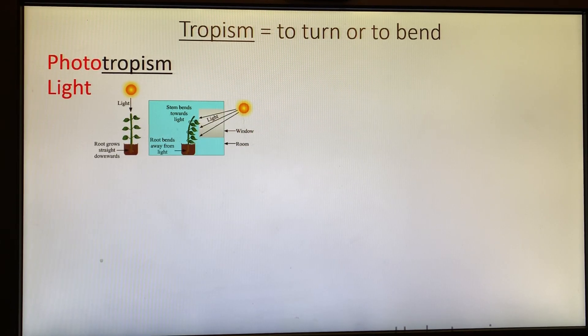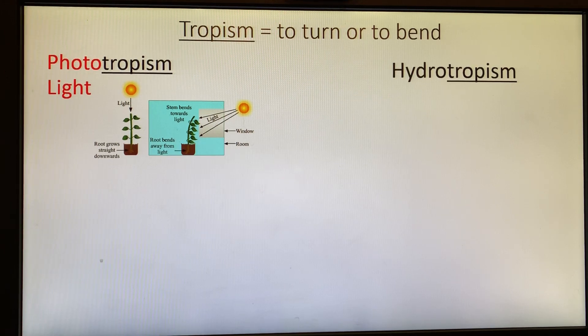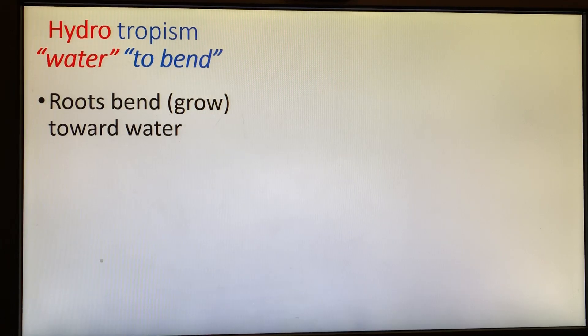First one was phototropism. Second one, hydrotropism. Hydro meaning water. Roots bend or grow towards water, which totally makes sense because plants need water to grow.